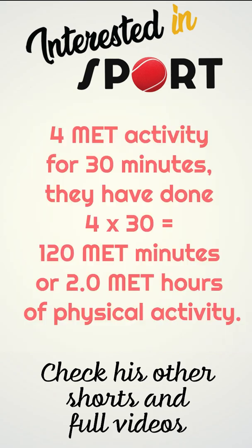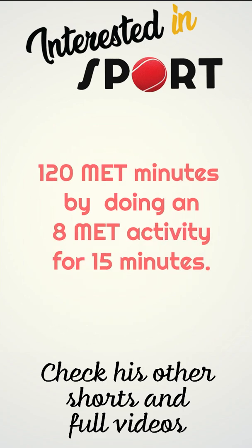If a person does a four MET activity for 30 minutes, they have done four times 30, which equals 120 MET minutes or two MET hours of physical activity. A person could also achieve 120 MET minutes by doing an eight MET activity for 15 minutes.